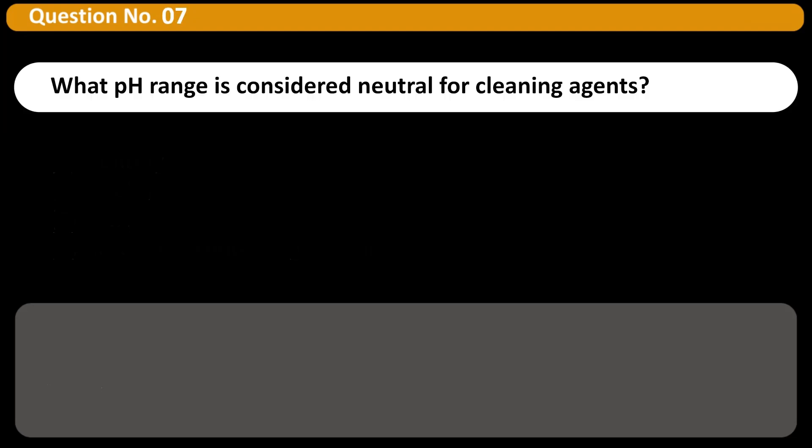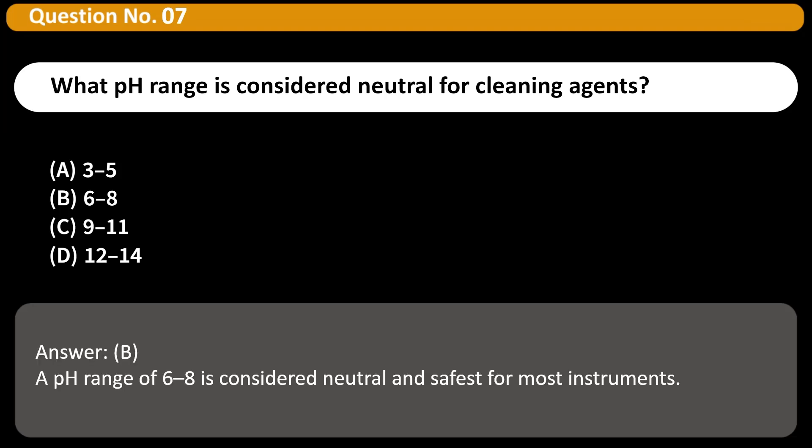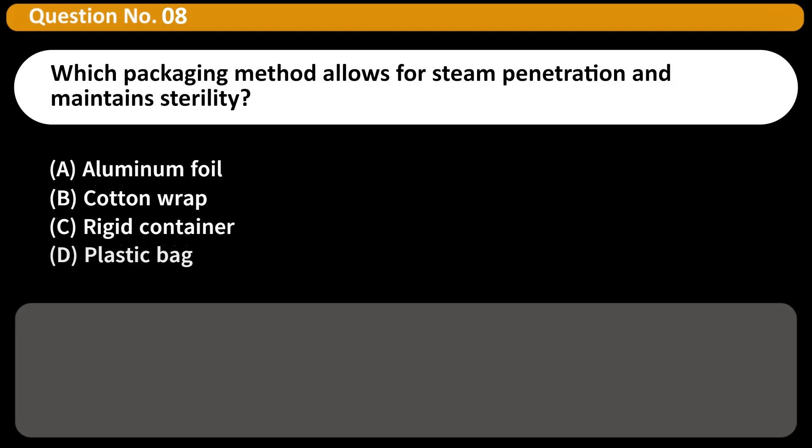What pH range is considered neutral for cleaning agents? A. 3-5, B. 6-8, C. 9-11, D. 12-14. Answer B. A pH range of 6-8 is considered neutral and safest for most instruments.